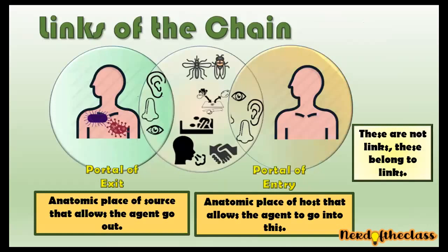We have the portal of exit and the portal of entry. The portal of exit is the anatomic place of the source that gives the agent the opportunity to go out from the source. And the portal of entry is the anatomic place of the susceptible host that allows the agent to enter the host. These are not properly links themselves — the portal of entry is part of the susceptible host, and the portal of exit is part of the source of infection.